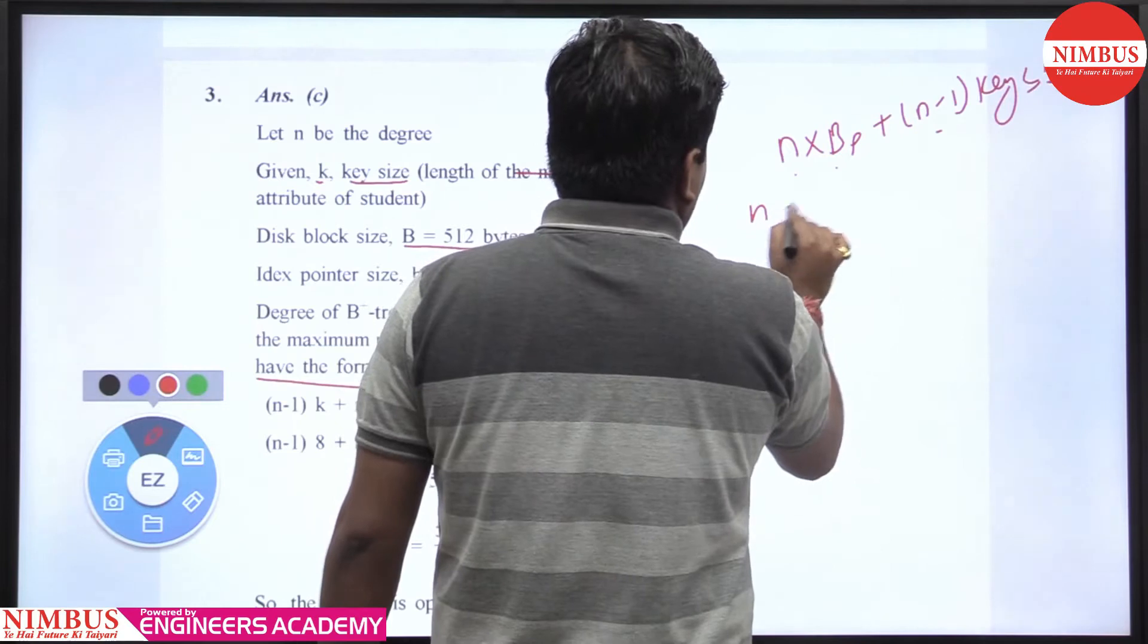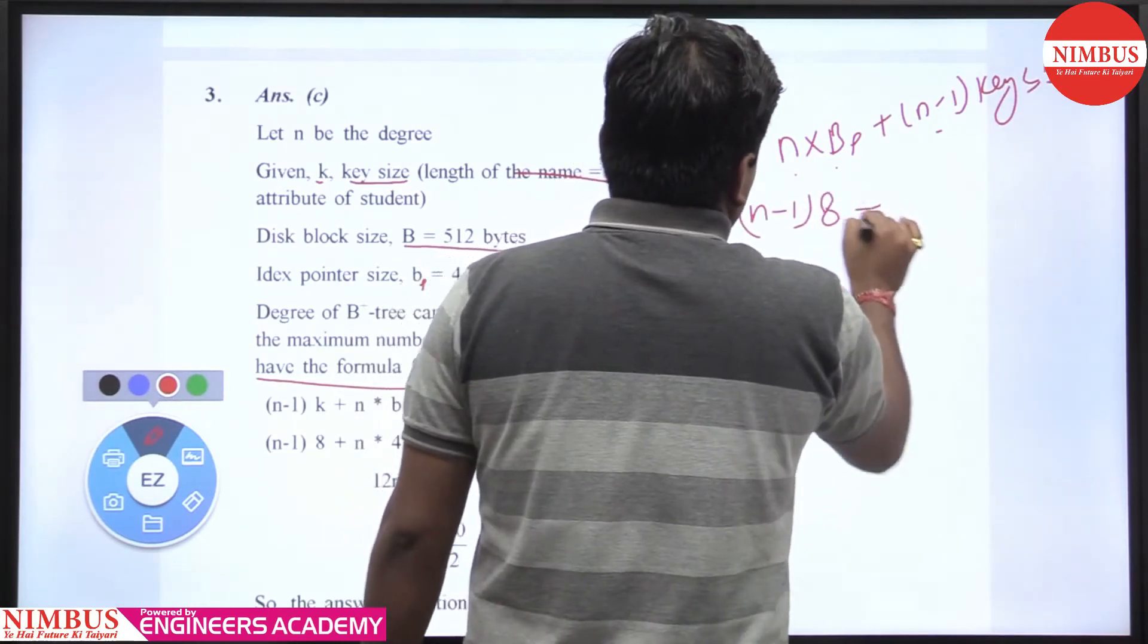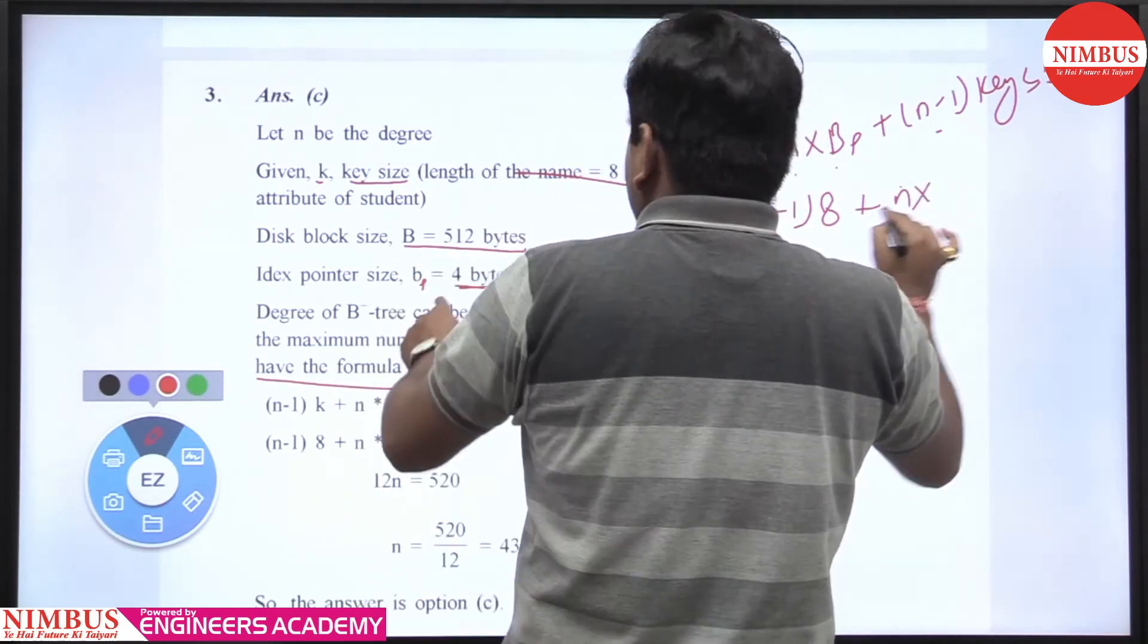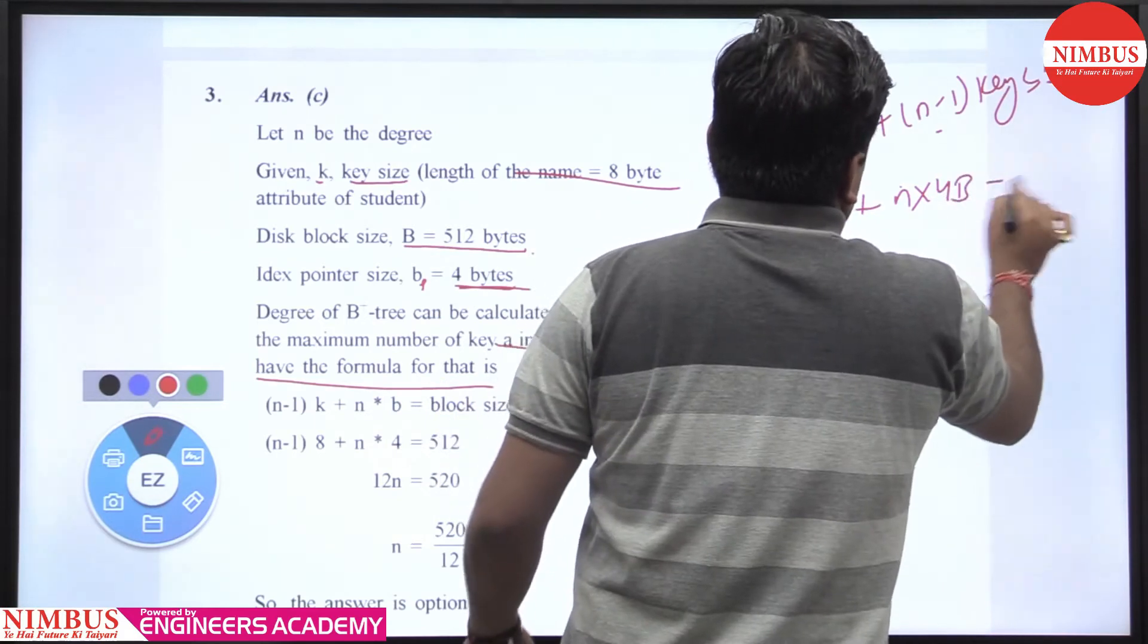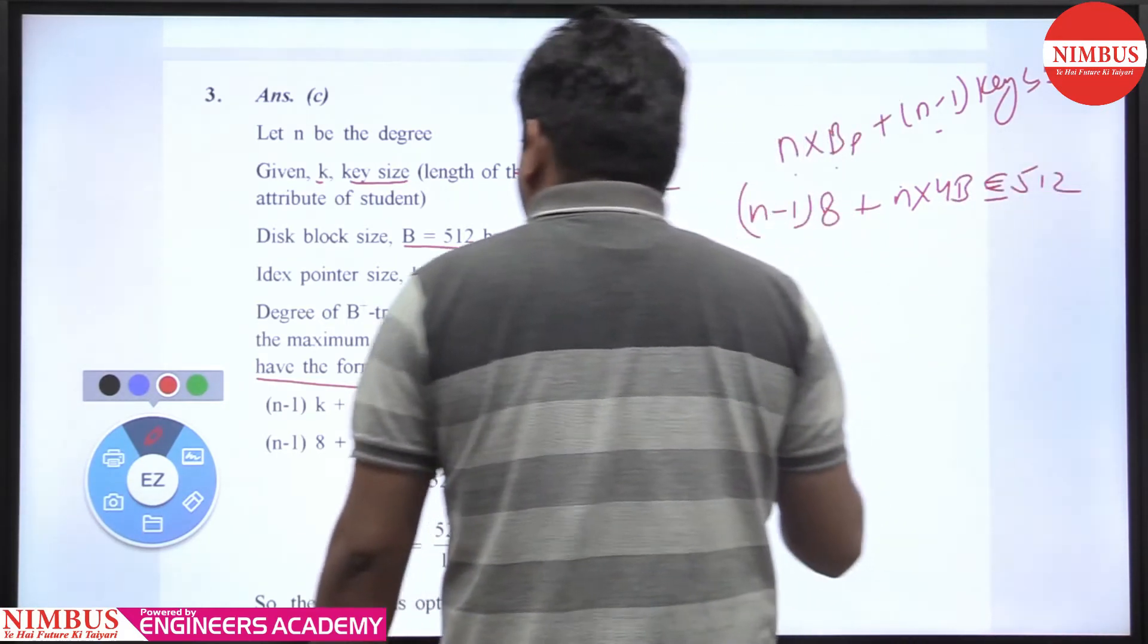So n times the key size of 8 bytes, plus n block pointers times 4 bytes, must be less than or equal to 512 bytes.